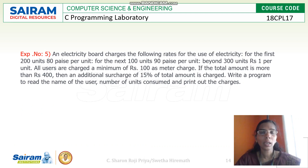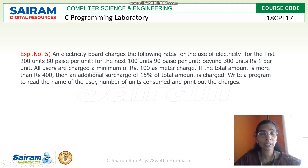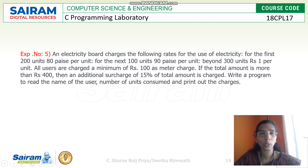This is the question. The electricity board charges the following rates for the use of electricity: for the first 200 units, 80 paisa per unit. For the next 100 units, that is if total units consumed is 300, for the first 200 it is 80 paisa and the next 100 it is 90 paisa. Beyond 300 units, 1 rupee. All users are charged with a minimum charge of rupees 100.